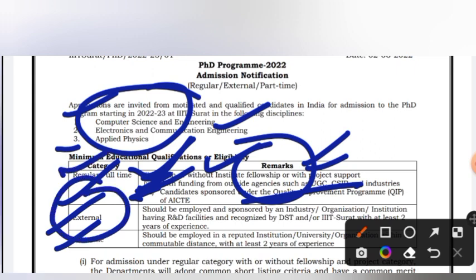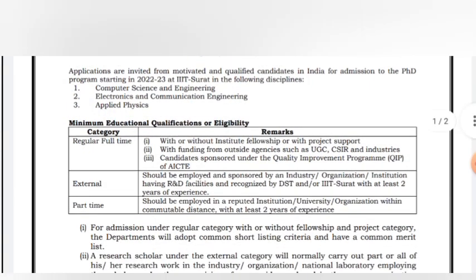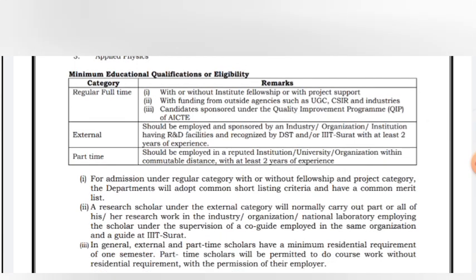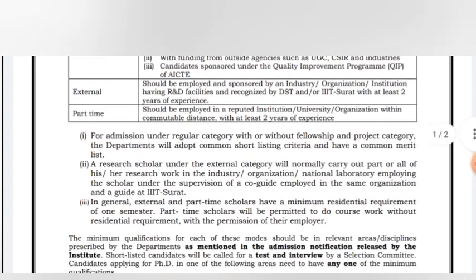For the External category, you have to be employed and sponsored by your organization or institution, which must have R&D facilities recognized by DST or IIIT, and you need two years of experience. For Part-time, you have to be employed in any reputed university, organization, or industry within commutable distance, also with two years of experience.